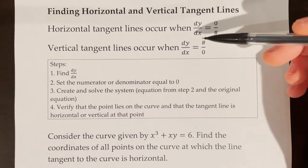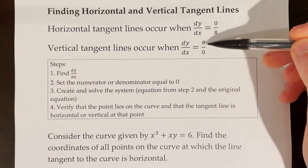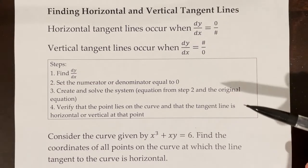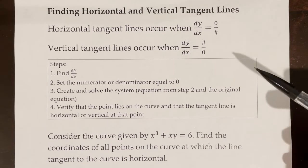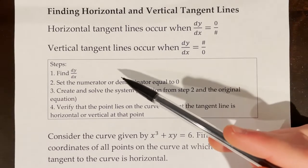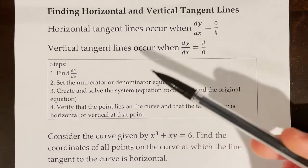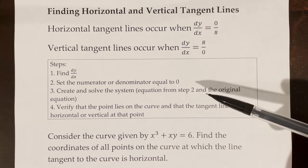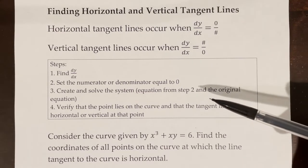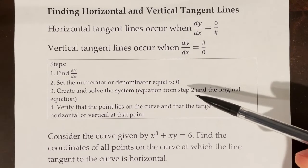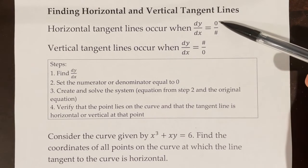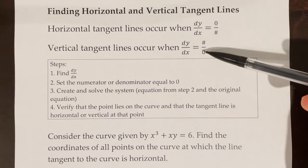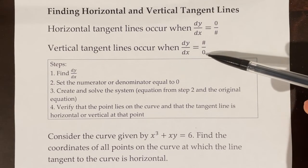Vertical tangent lines occur when the derivative produces a number over 0. The steps for finding horizontal and vertical tangent lines for an implicit equation: first, find dy/dx. Second, set the numerator or denominator equal to 0 — numerator for horizontal tangent lines, denominator for vertical tangent lines.